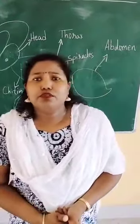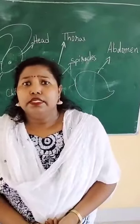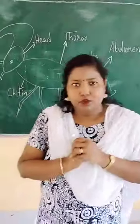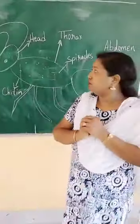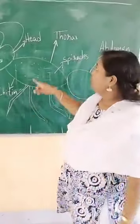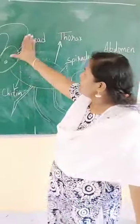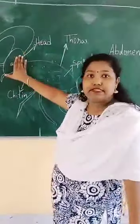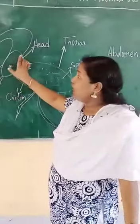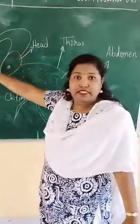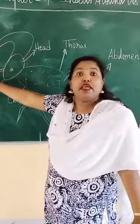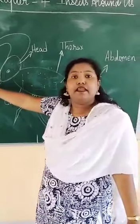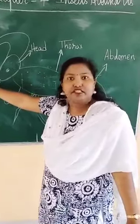So today we are going to learn the different parts of an insect. So here, this is a head. This is a head, and this is an antenna.